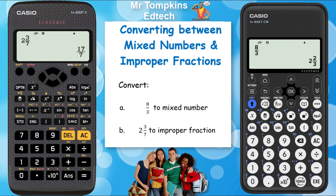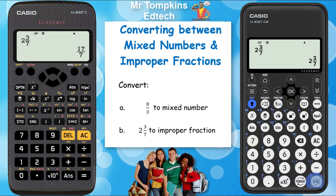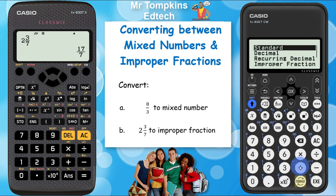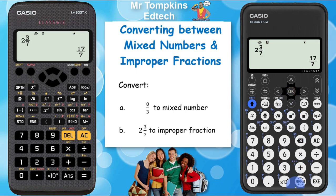On the new Casio, doing the same thing — press the 2 first, then the shift key, then the fraction key, which gives me the setup for the mixed number. I'm going to press 3 to fill in the numerator, then the down key, then 7 to write in the denominator. Pressing execute shows it as a mixed number still, and on this one I now need to press the format key and change it into an improper fraction, and that gives me 17 over 7.